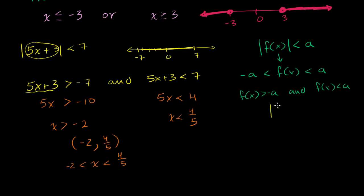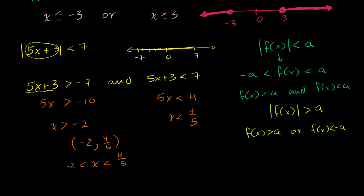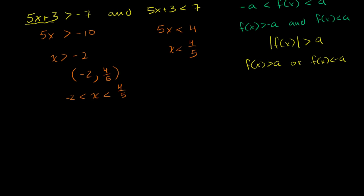If we go the other side — if you have the absolute value of f(x) is greater than a, that means this thing has to evaluate to something that is further than a away from 0. So f(x) is either greater than positive a, or f(x) is less than negative a. If it's less than negative a — maybe it's negative a minus 1, or negative 5 plus negative a — then when you take its absolute value, it'll be a plus 5, so its absolute value is going to be greater than a. You could memorize this, but really this is just saying: this has to be less than a away from 0, or more than a away from 0.